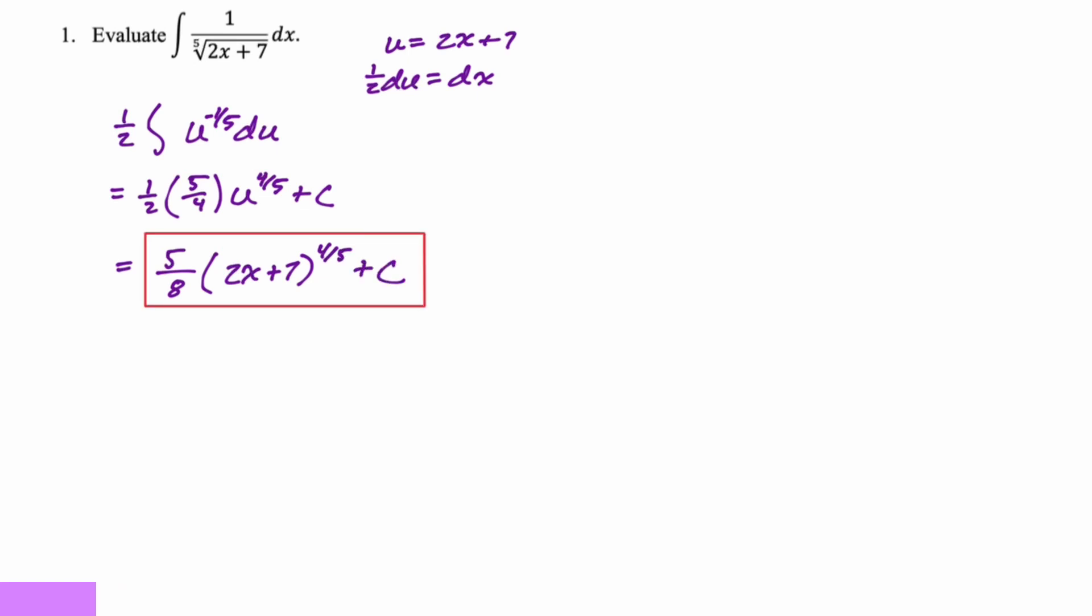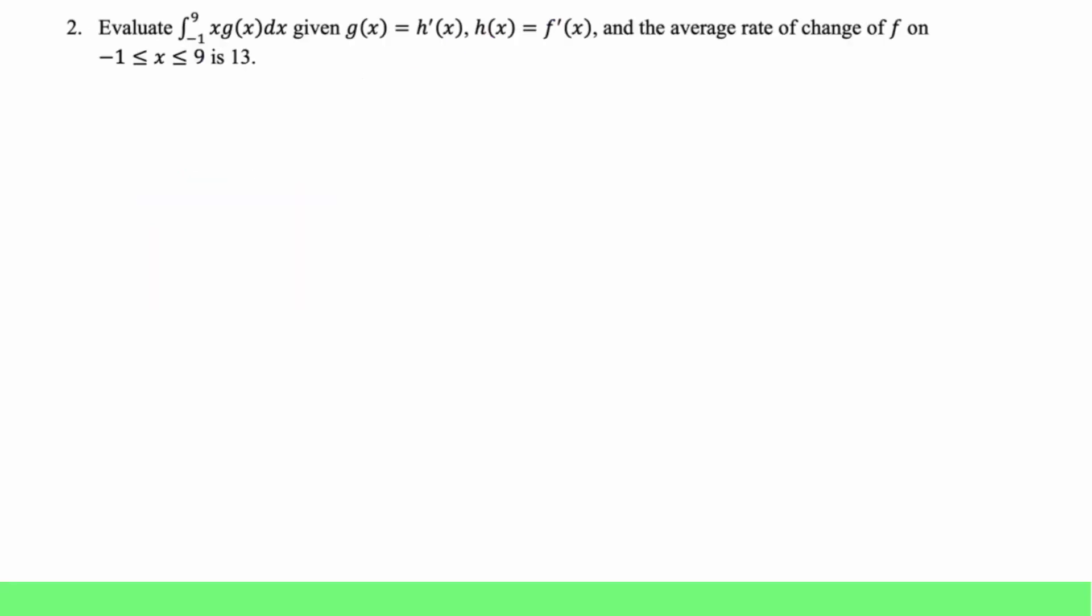So we end up with five eighths, two x plus seven to the four fifths plus c. That's it. I don't know if that's really a BC level question. You'll run into problems like that. It's not like BC exclusive material, though. All right, next up.